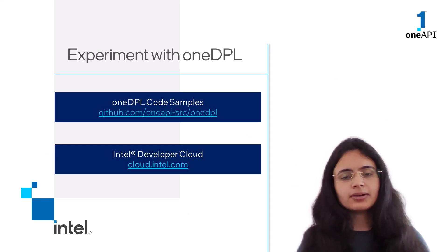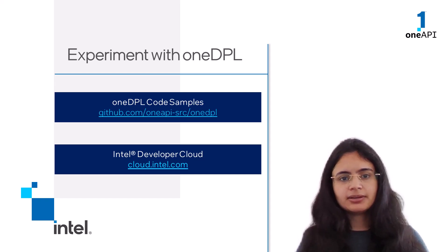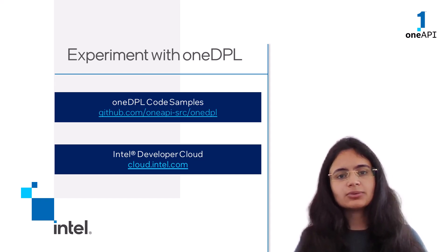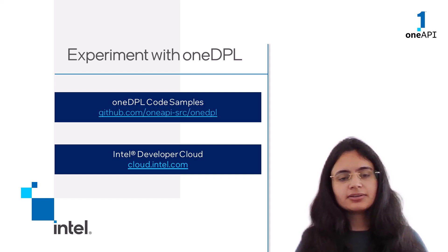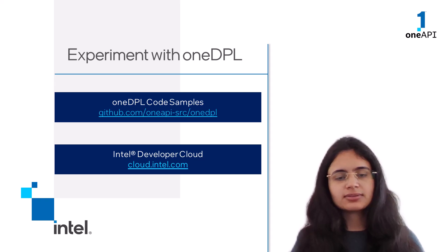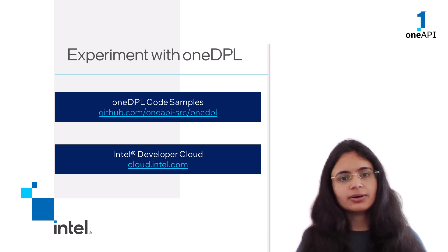In this video, I talked about the main components of oneDPL: namely Parallel API, SYCL Kernels API, and the newly added Device Selection API. I encourage you to get started with oneDPL to add advanced parallelism to your core C++ applications. Detailed resources are available in the video description. Check out the oneDPL code samples on GitHub and try your hands on the library on the Intel Developer Cloud platform. Thank you for watching.